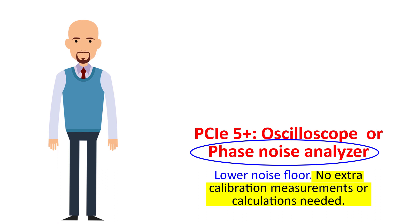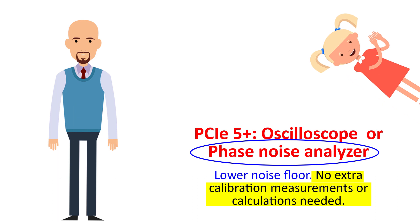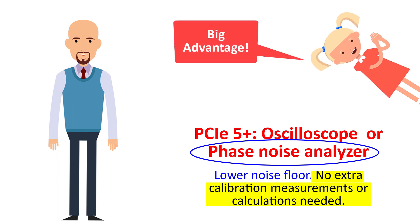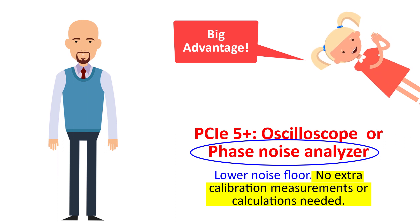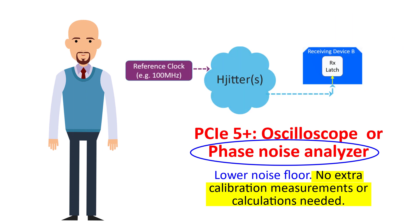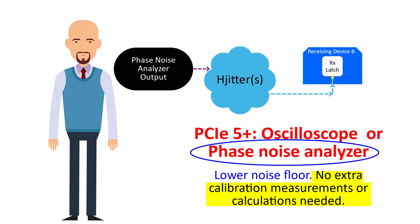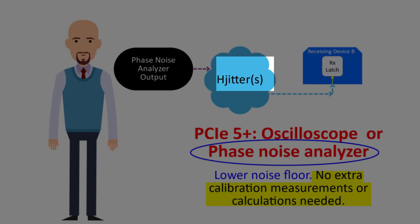There is a significant advantage to using a phase noise analyzer. There is no need for a special set of calibration measurements, and there is no need to mathematically calculate and apply adjustments to the measured results. We can simply take the data produced by a phase noise analyzer, which of course is in the frequency domain already, and pass it through the various Laplace jitter function combinations.